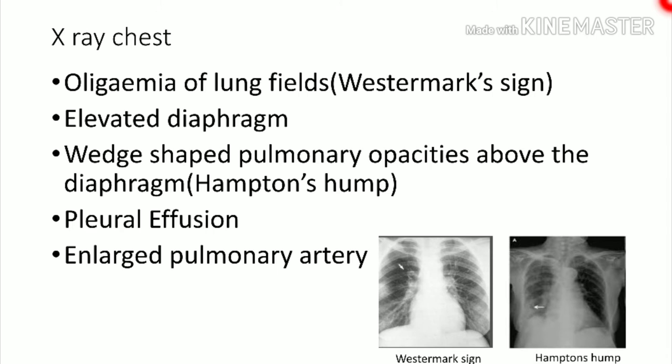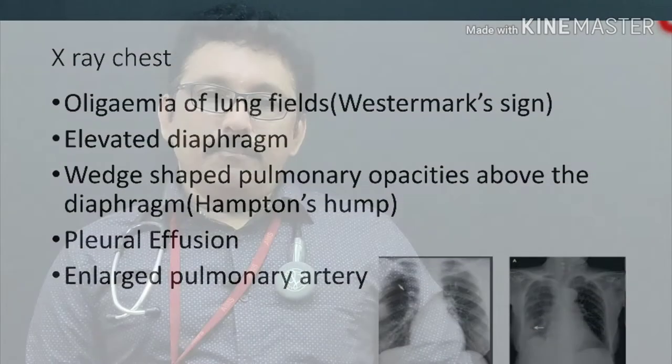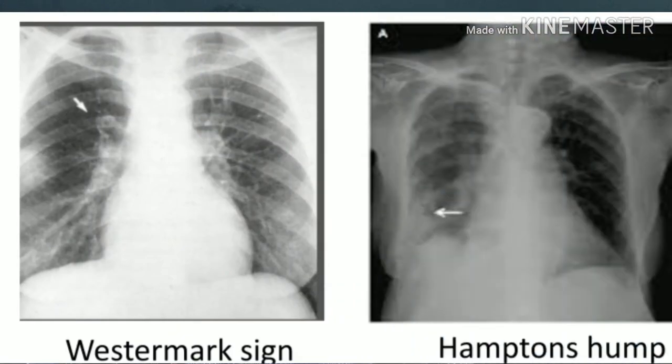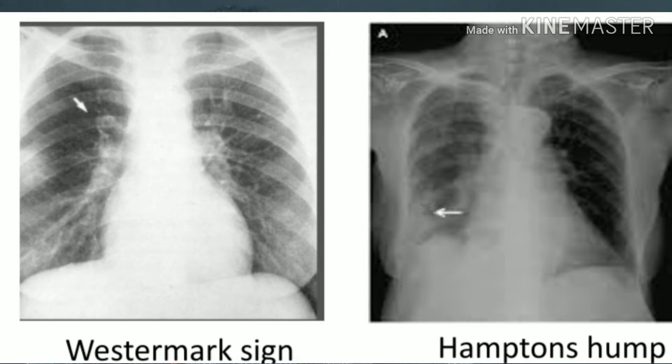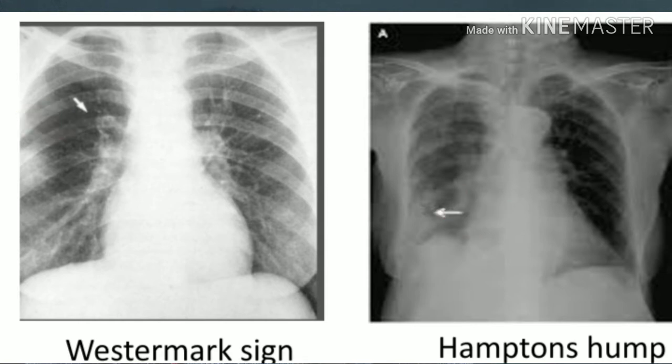On chest X-ray in suspected pulmonary embolism, the diaphragm may be elevated, and oligemia of the lung field at the area of infarction is classically known as the Westermark sign. A wedge-shaped opacity above the diaphragm is called Hampton's hump. Pleural effusion may be seen on the side of the embolism, and pulmonary artery enlargement may also be noted. These two classical signs — Westermark sign and Hampton's hump — are not seen in all patients.